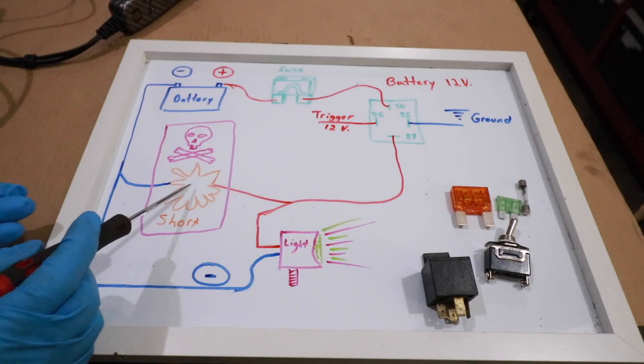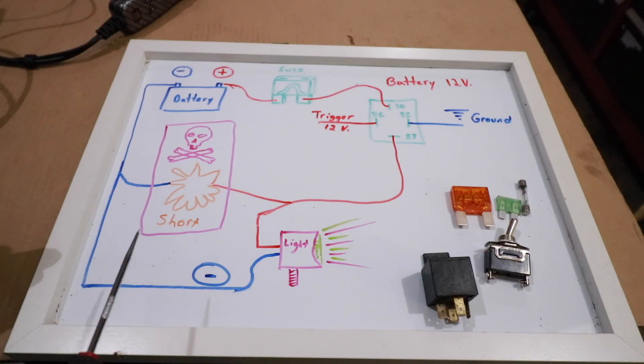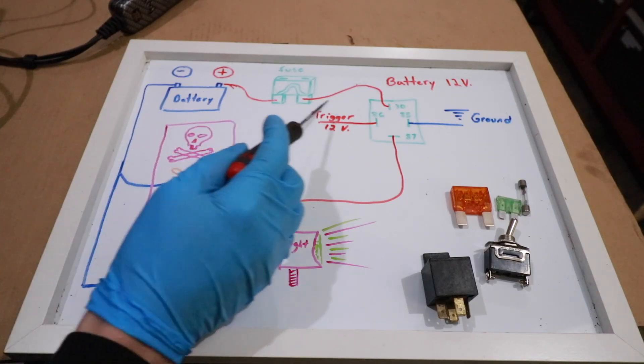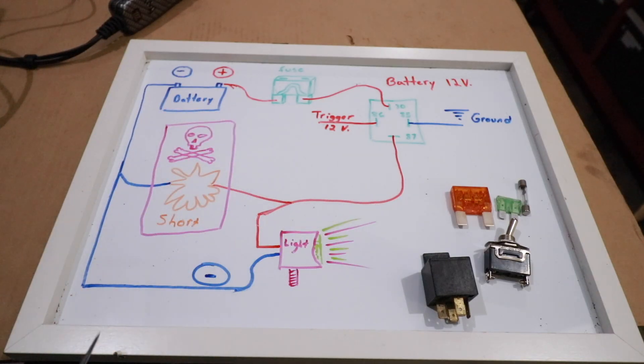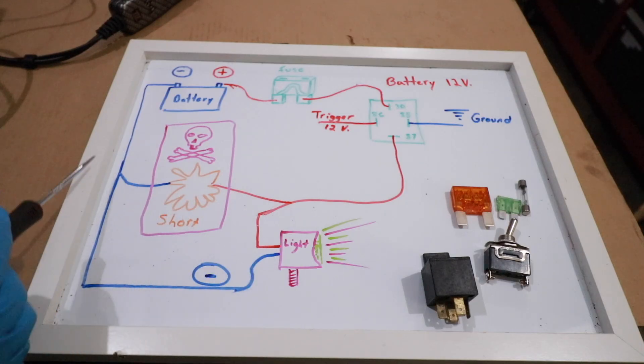The wire has rubbed and is now touching a metallic object which is also grounded on the vehicle. The power isn't able to make it to the fixture we need to power because electricity likes to take the path of least resistance, and in this case the short is the path of least resistance.